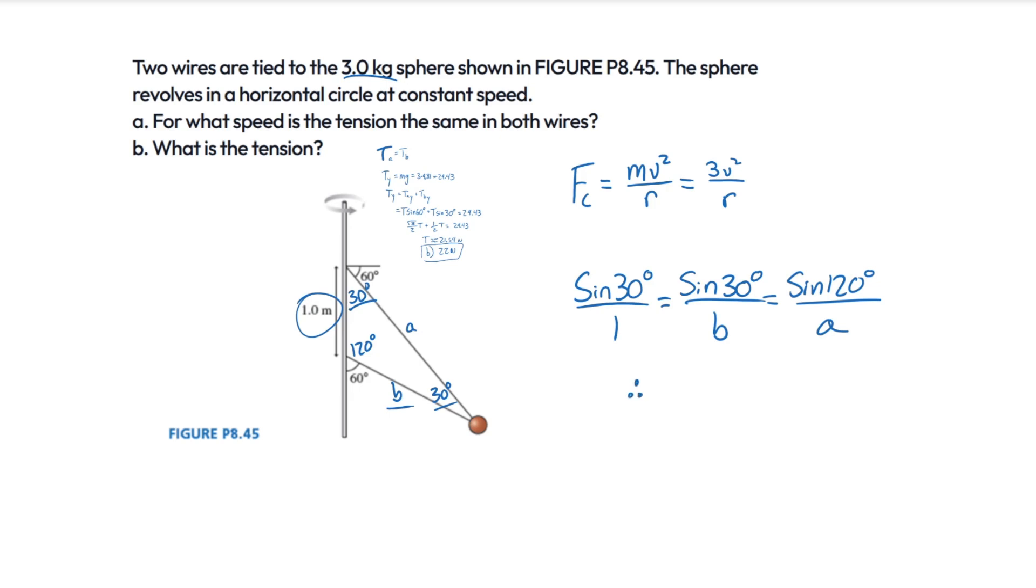Now, therefore, b is equal to 1, right? Because in order for this first part to be true, well, everything else is the same. So b is equal to 1. Now, we have to find what a is equal to. Well, sine of 120 degrees divided by a is just equal to the square root of 3 divided by 2, all divided by a. And that's equal to sine of 30 divided by 1. Sine of 30 is 1 half. 1 half divided by 1 is equal to 1 half. So, therefore, a is equal to the square root of 3.